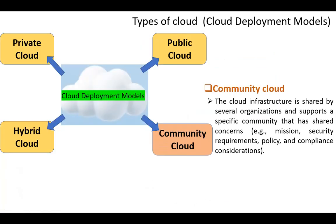In addition to the above-mentioned three types of clouds, there is a fourth type: community cloud. In this type, the cloud infrastructure is shared by several organizations and supports a specific community with shared concerns, e.g., mission, security, requirements, policy, and compliance considerations.